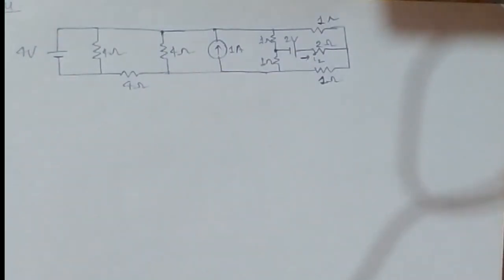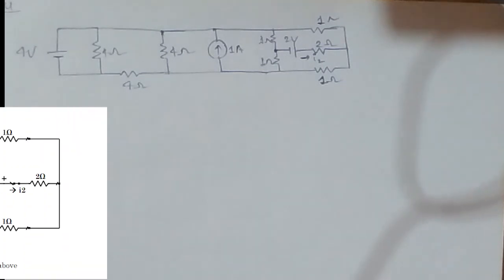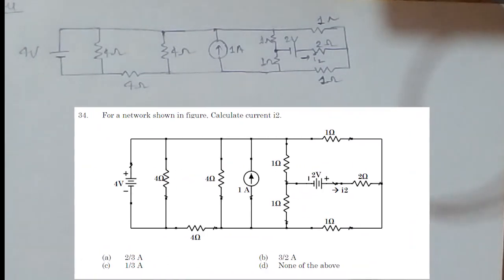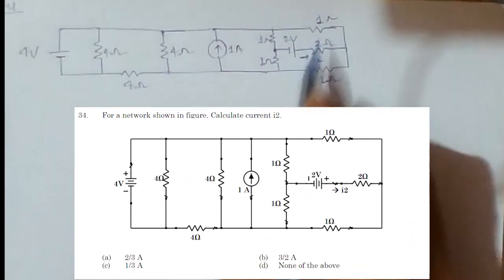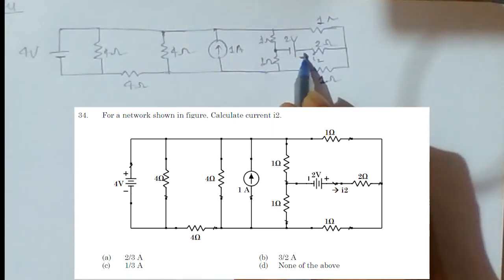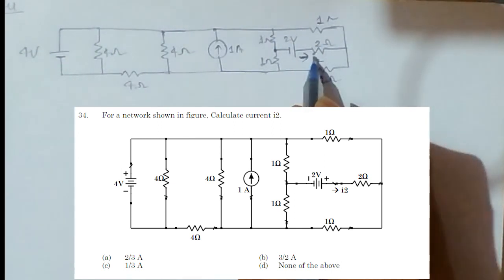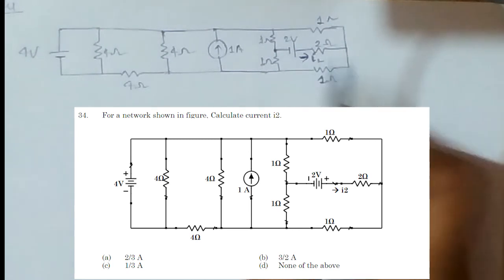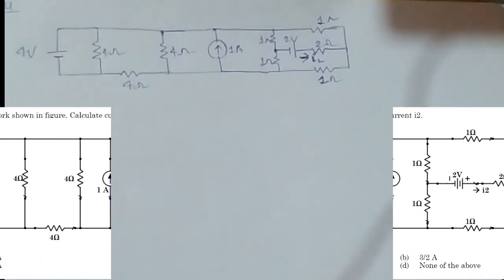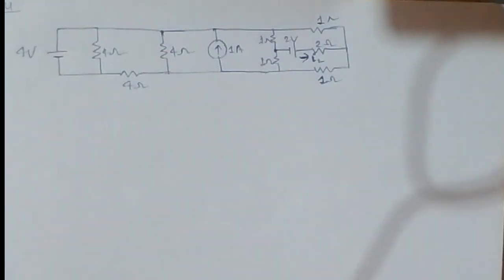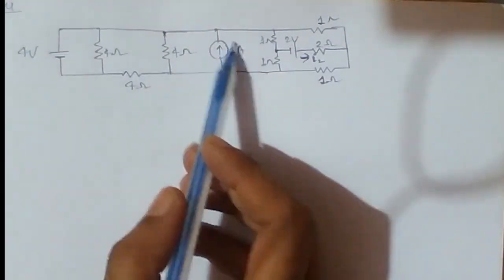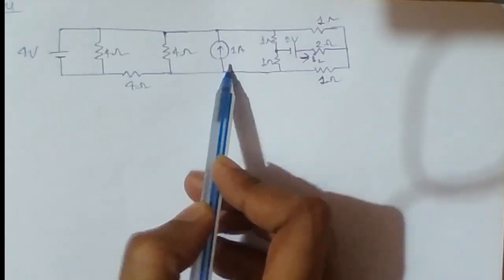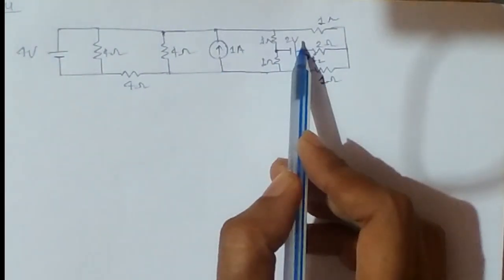Hello friends, welcome to GateLan. In this question, we have to find the current flowing through this network circuit. This is my current I and I have to find this current. We can see that we have three sources available in this circuit: one is four volt, one is one ampere source, and another is two volt source.